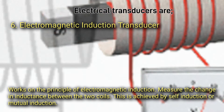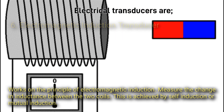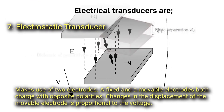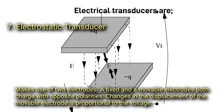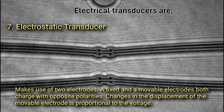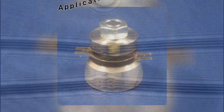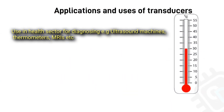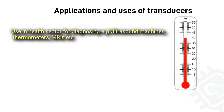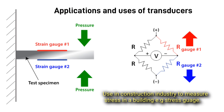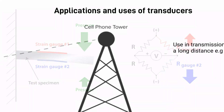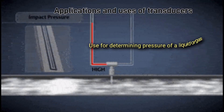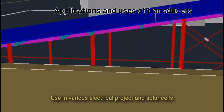Six, electromagnetic induction transducers — work on the principle of electromagnetic induction, measuring the change in inductance between two coils through self-induction and mutual induction. Seven, electrostatic transducers — use two electrodes, one fixed and one movable, both charged with opposite polarities; the change in displacement of the movable electrode is proportional to the voltage. Applications include use in the health sector for diagnosing — examples include ultrasound machines, thermometers, and MRIs — and in the construction industry to measure stress, for example strain gauges.